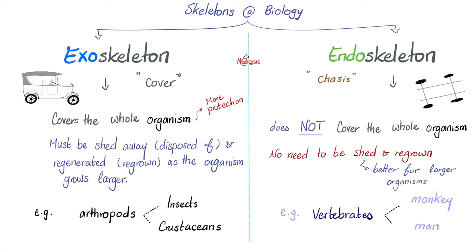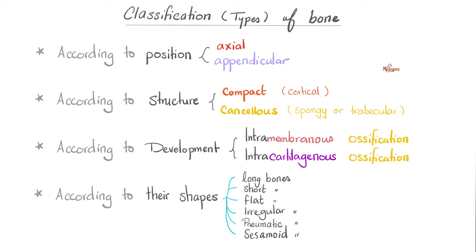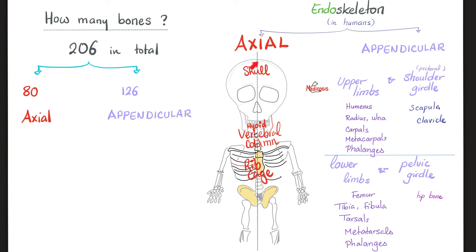Let's review what we said in the last video. Humans have an endoskeleton. Some of your bones are axial, others are appendicular. Bones could be compact or cortical, or cancellous, spongy, or trabecular. According to development, you can make bones by intramembranous ossification or intracartilaginous ossification. According to their shapes, we have long bones, short bones, flat bones, irregular bones, pneumatic bones, and sesamoid bones. Axial skeleton is in the midline; appendicular is to the right or to the left.